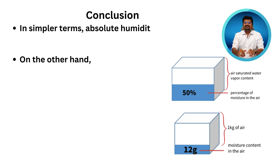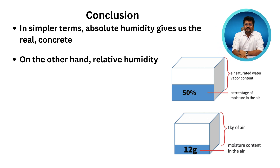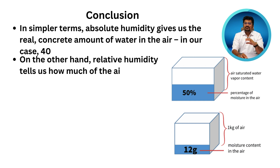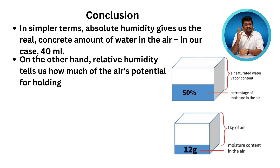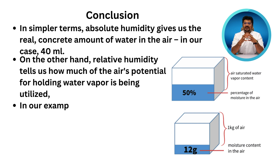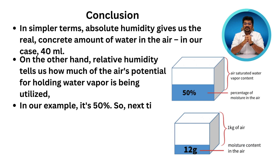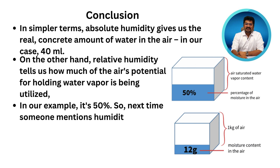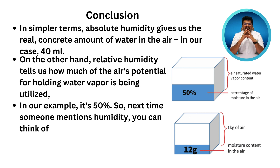In conclusion, in simpler terms: absolute humidity gives us the real, concrete amount of water in the air — in our case, 40 ml. On the other hand, relative humidity tells us how much of the air's potential for holding water vapor is being utilized — in our example, 50%.